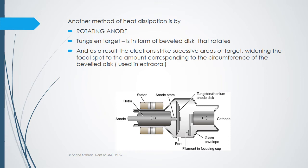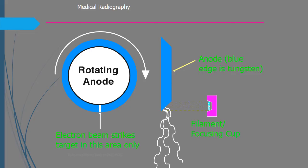Another method of heat dissipation is the rotating anode, used in panoramic radiography, CT, and CBCT machines. Instead of a single copper stem block, it is a copper disc with an embedded layer of tungsten that keeps rotating. After one exposure, it goes through a full rotation during which it cools down, then returns ready for the next exposure.